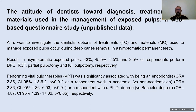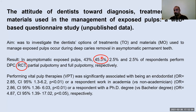The results show that 45% of surveyed dentists who participated chose to do RCT for asymptomatic exposed pulp — a 45% devitalization rate for asymptomatic exposed pulp. I did not ask them about symptomatic cases, which would probably yield an even higher percentage choosing root canal treatment or pulpectomy.